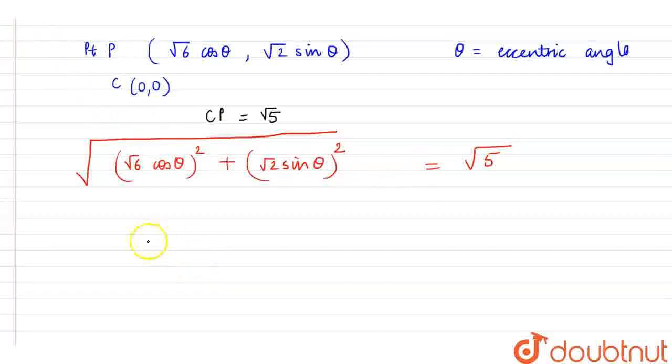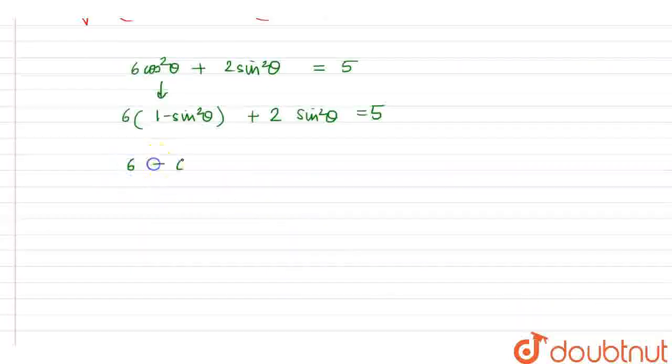Now, squaring both sides, we will get 6 cos² theta plus 2 sin² theta equals 5. This can be written as 6 cos² theta plus 2 into (1 - cos² theta) equals 5. Further, this becomes 6 - 6 sin² theta plus 2 sin² theta equals 5.